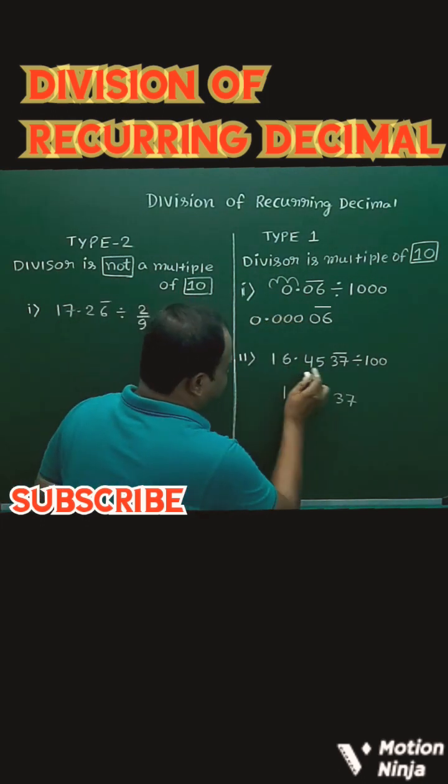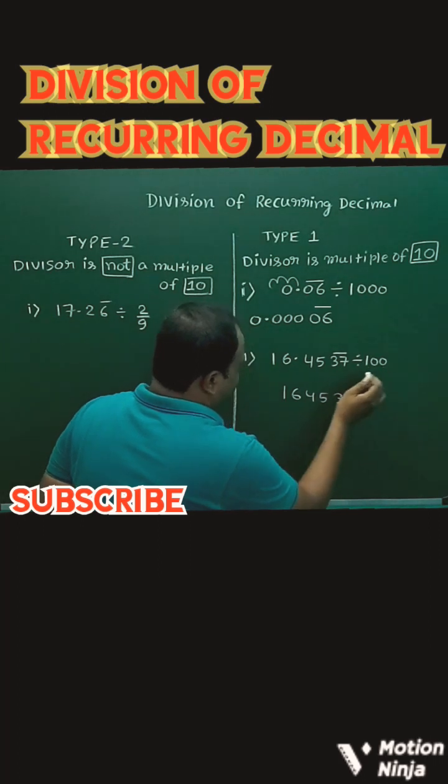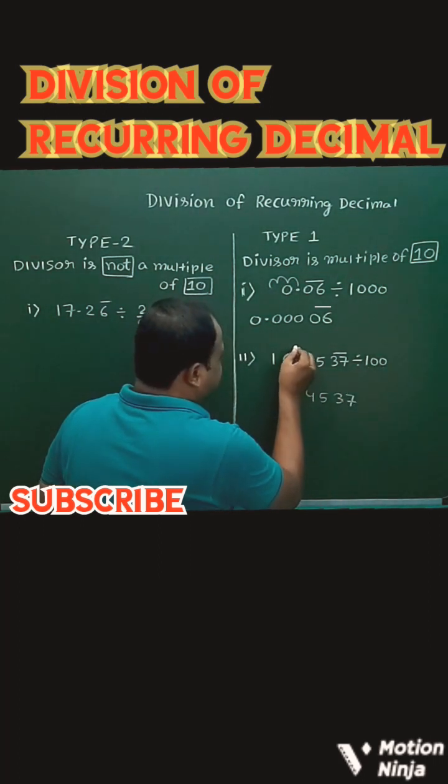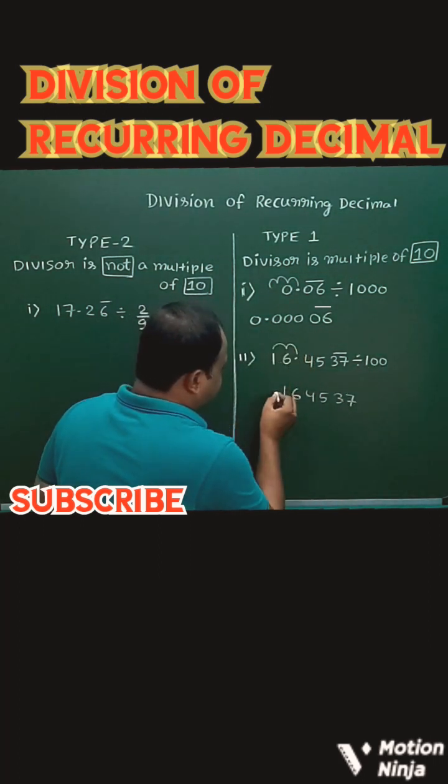Similarly here, I will first copy the number. It is divided by 100, so I will move the decimal two places. That is, the decimal point will come before one.